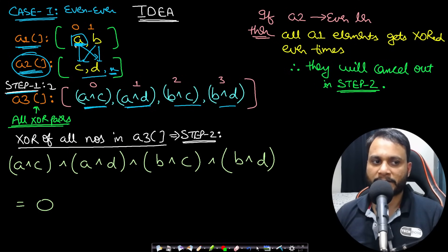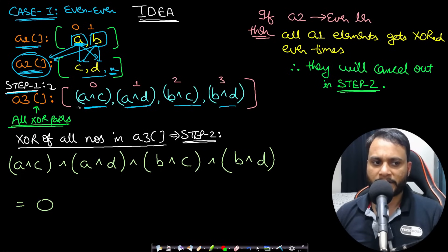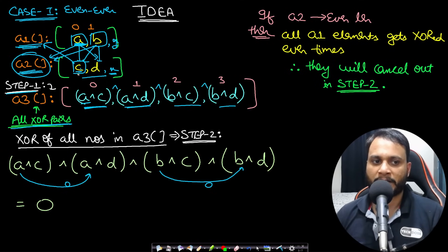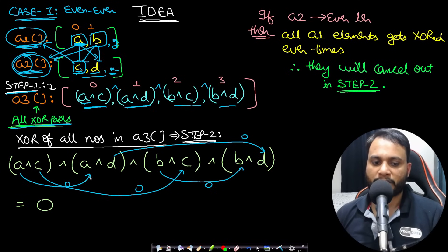How many times each element of A1 appears depends on the size of A2, and similarly how many times each element of A2 appears depends on the size of A1. In step 2, when we XOR all pairs together: A occurring two times cancels to 0, and B occurring two times also cancels to 0. Similarly C is present twice (because |A1| = 2), so C XOR C = 0, and D XOR D = 0. Everything cancels out and the result is 0.